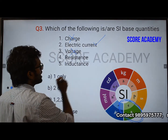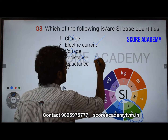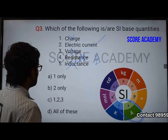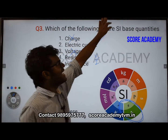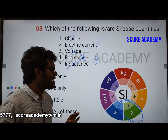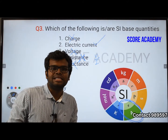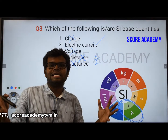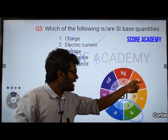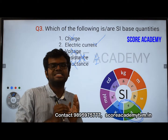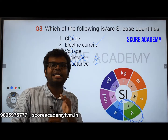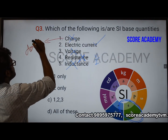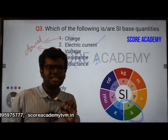Voltage is not a base quantity — it is derived. Resistance is obviously equal to V by I, so resistance is derived. Inductance is also derived. The charge is a derived quantity. Voltage is derived. In the SI system, we define the base units, and all other quantities are expressed in terms of those base units. I hope it is very clear.